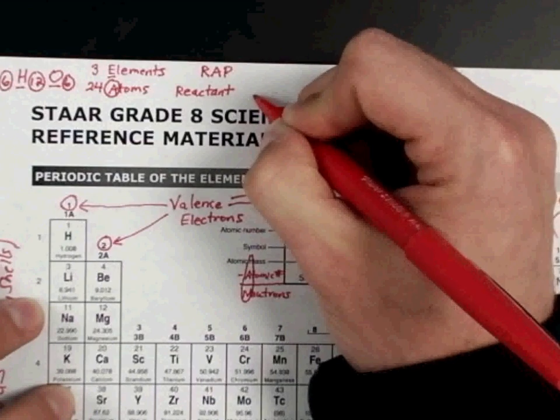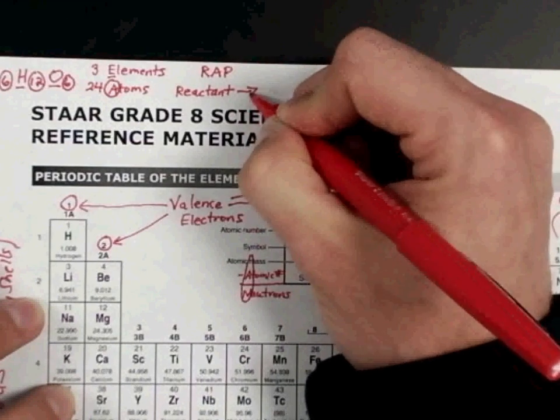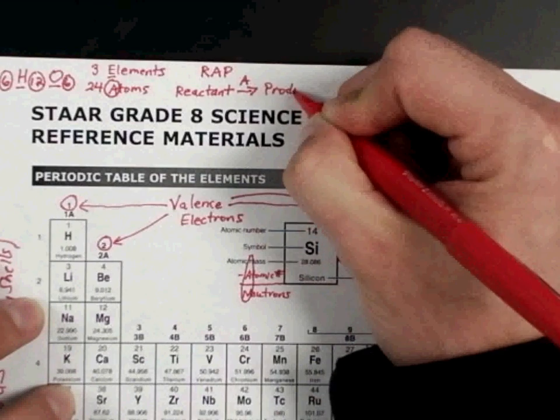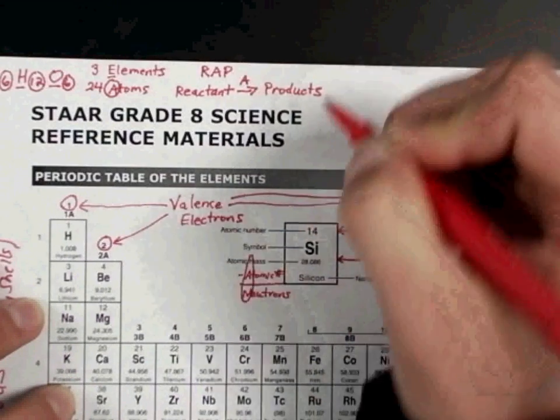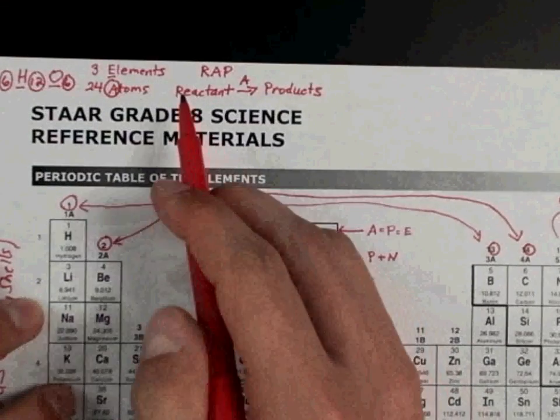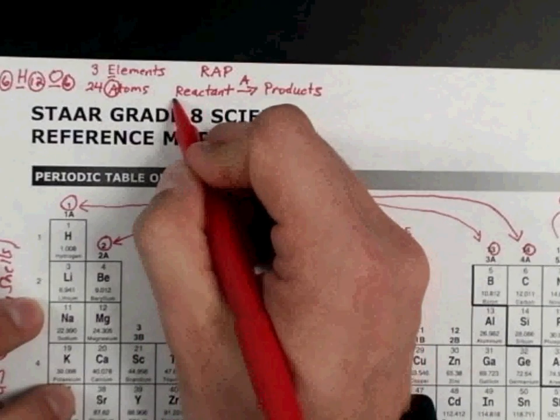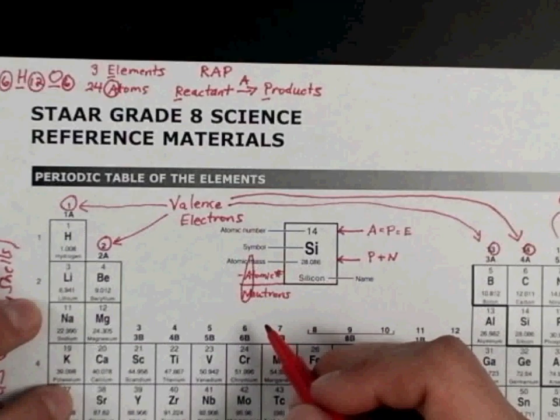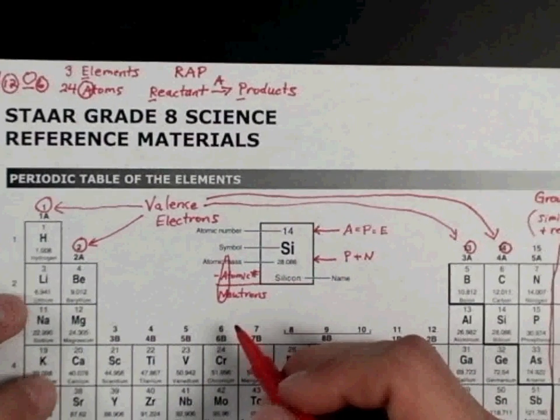In order to be balanced, they have to have the same number on each side, the same number of atoms. We call this RAP because there's an R in reactant, the A stands for the arrow, and the P stands for the product. If it's totally balanced, then those numbers will totally match up.